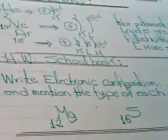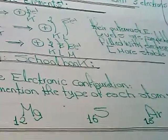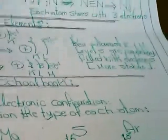Homework, schoolbook. Write electronic configuration and mention the type of each atoms. Magnesium, Mg 12, sulfur, S 16, argon, Ar 18.